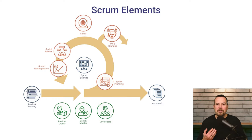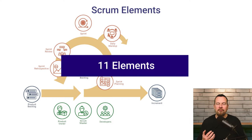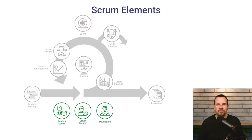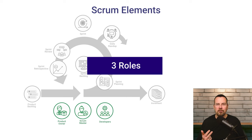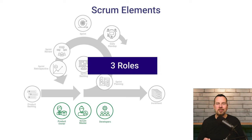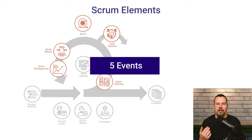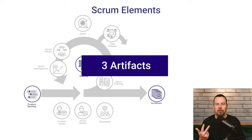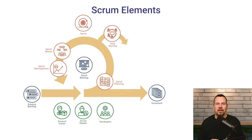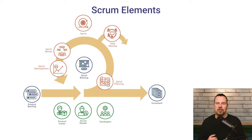Scrum is a very simple framework consisting of 11 elements: three roles of team members, five events, and three artifacts. Let's start with Scrum roles.